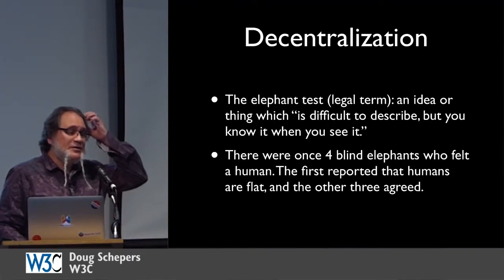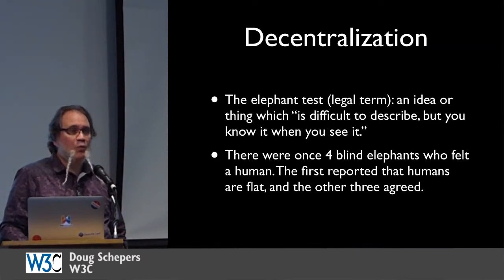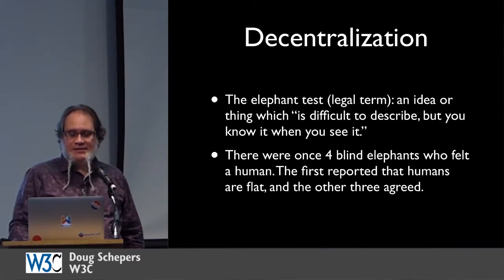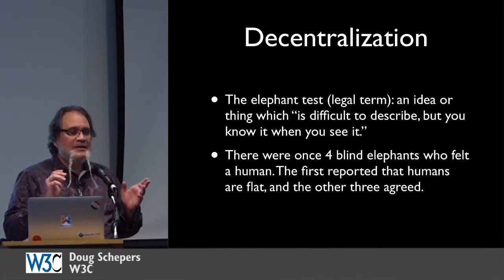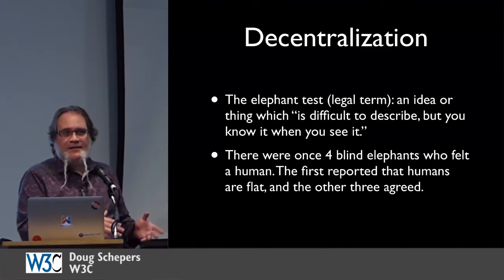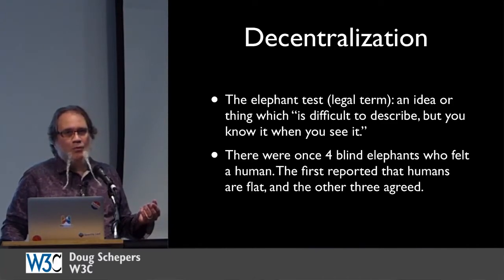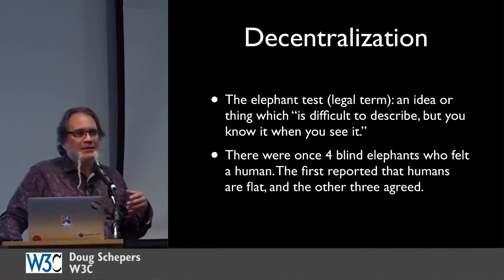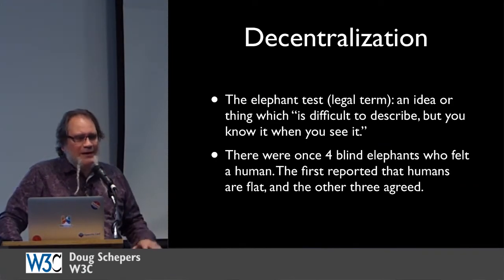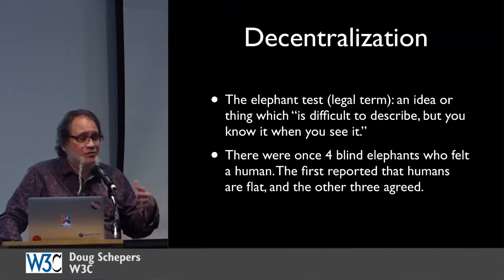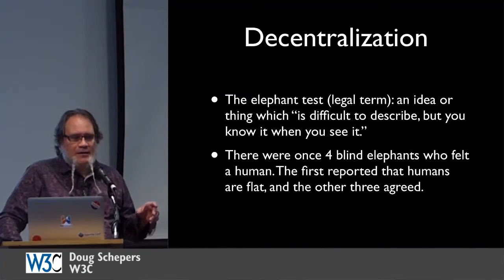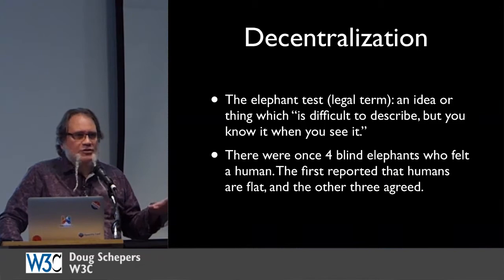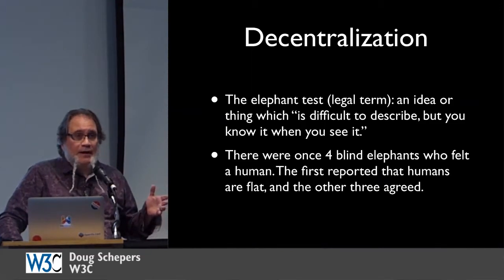Decentralization is really important. I think it's at the core of the idea of web annotations. The elephant test, in legal terms, is an idea or thing that's difficult to describe but you know it when you see it. I can't tell you exactly how we'll get to decentralization, but once we figure out those mechanisms, we'll know the right direction. Right now we have a lot of centralization around services — I use Twitter, Facebook, Google+ — but if we only see one or two annotation services emerge, that's going to be a problem. We need lots of different annotation services.